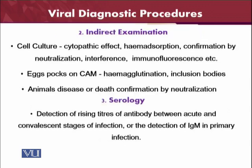For indirect examination of viruses, cell culture is used. In cell culture, you can observe cytopathic effects or hemagglutination effects. You can also confirm virus neutralization using virus neutralization tests or serum neutralization tests. There are also embryonated eggs used on the chorioallantoic membrane, where you can see hemagglutination or inclusion bodies. Animal disease or death confirmed by virus neutralization can also be used for diagnosis.